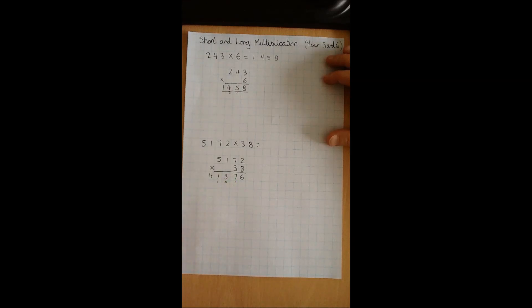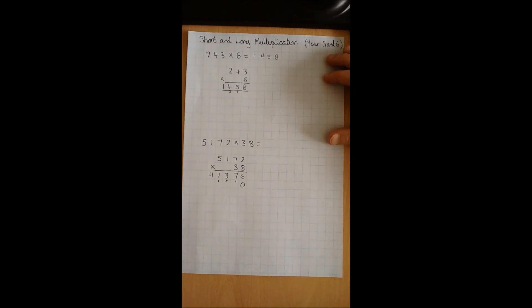Now this next part is something that needs to be remembered. The 3 we know is actually in the tens column and represents the 30. So because we're multiplying by a multiple of 10, we need to make sure that we place a 0 into the ones column to hold the place value.